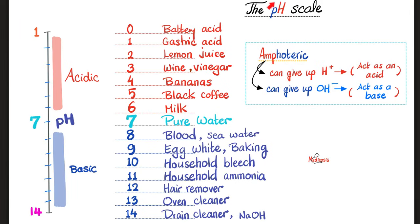The pH scale. Remember, there is an inverse correlation between pH and hydrogen ion concentration. So, the lower the pH, the more acidic the solution. And vice versa, the higher the pH, the more basic the solution. Something that is super acidic, battery acid. Extremely dangerous, followed by gastric acid in your stomach, lemon juice, wine, vinegar, bananas, black coffee, milk. Pure distilled water is neutral, meaning the pH is 7. And then let's go to the basic stuff. Blood, seawater. Yeah, your blood is 7.4, slightly alkaline. Egg white, baking soda, household bleach, household ammonia, hair remover, oven cleaner, drain cleaner. Super duper basic. Notice that household cleaners are usually basic.